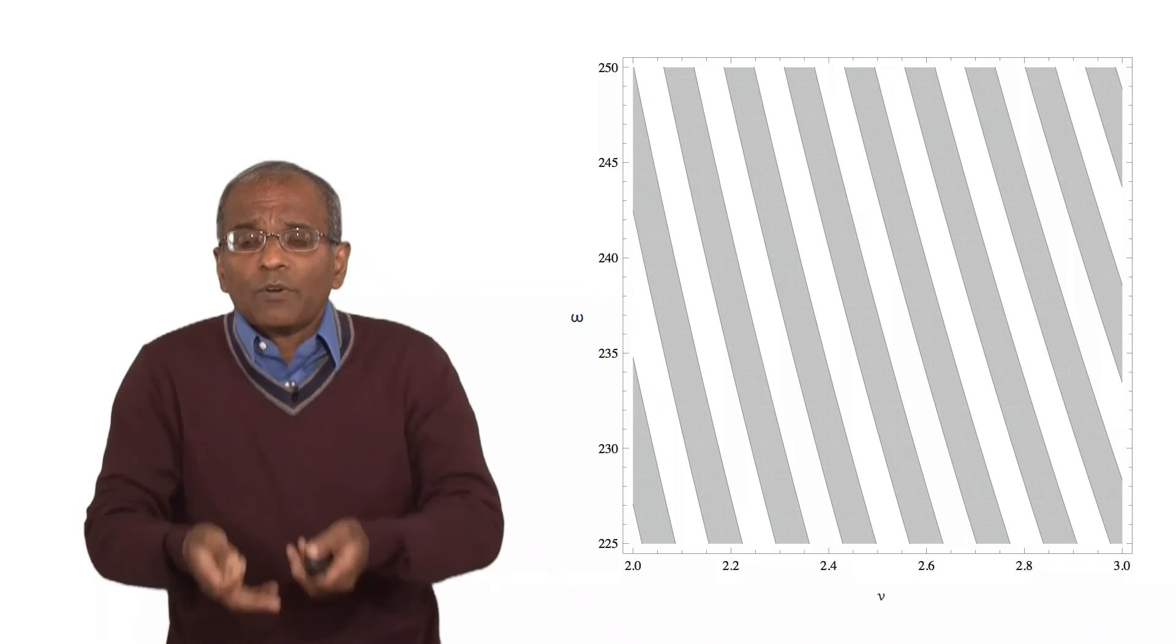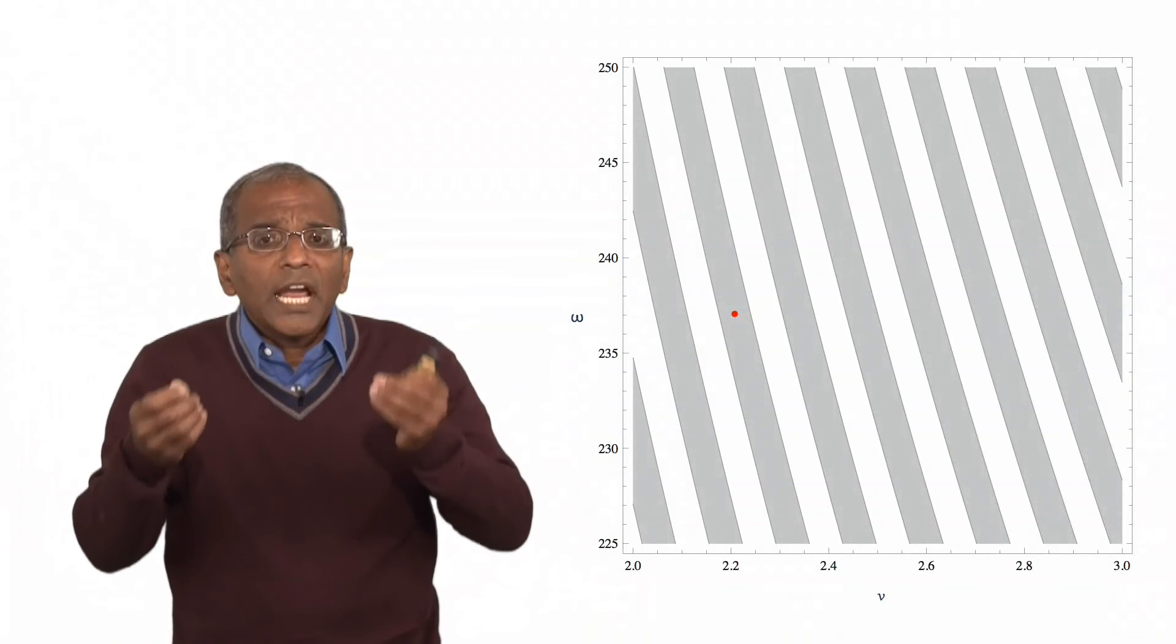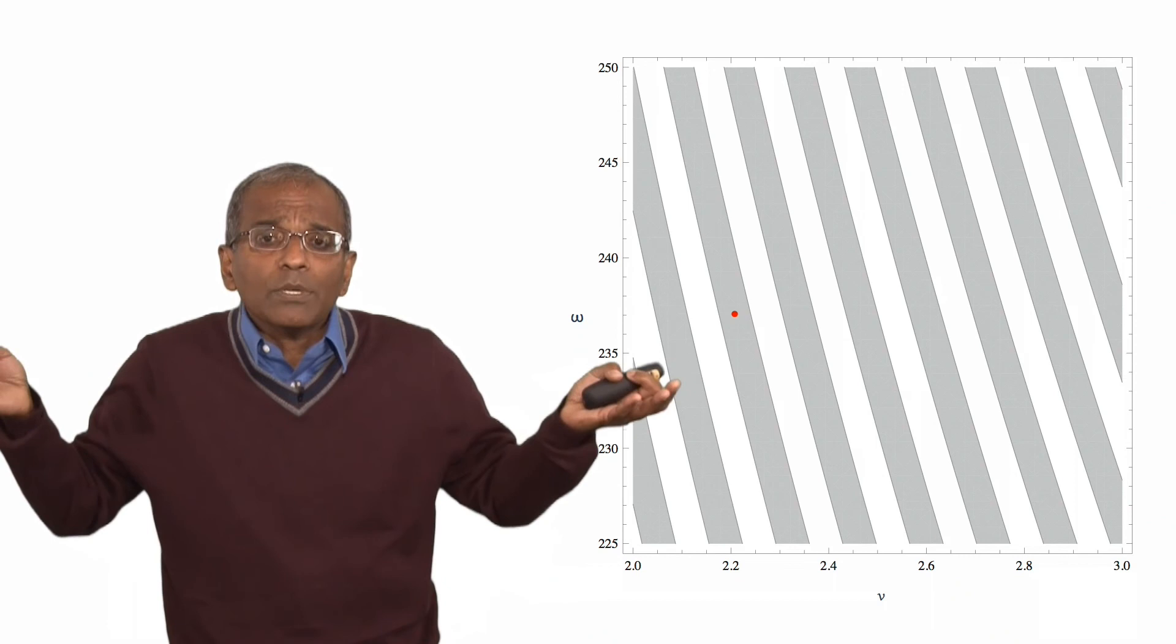So, for example, if here is a combination of v and omega, it lands you slap, bang, in the middle of a shaded region, you say, well, the outcome is going to be a head.